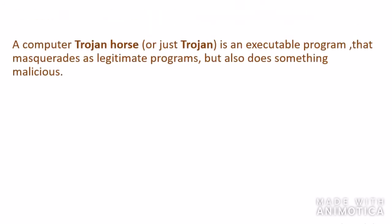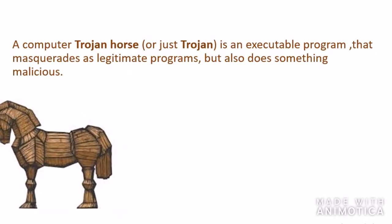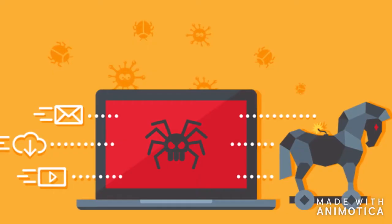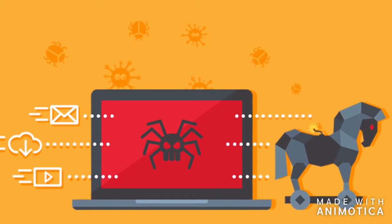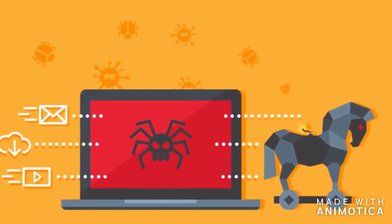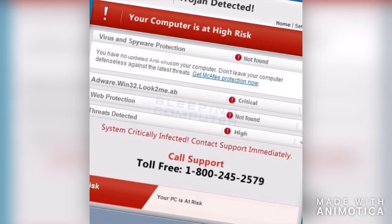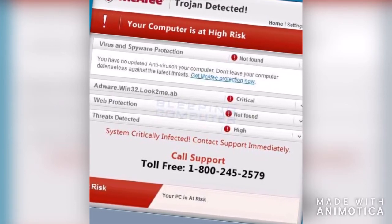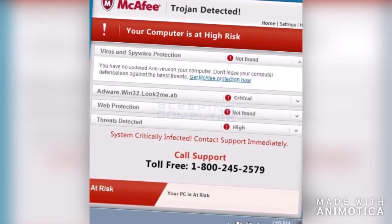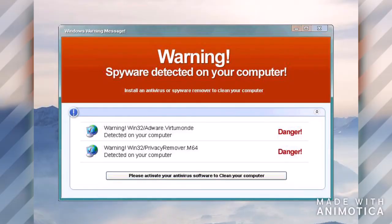Another type of malware is a Trojan horse. A Trojan horse is an executable program that disguises itself as a legitimate program but also performs something malicious. An attacker hides it in games, software patches, or email attachments. One of the most popular Trojans is the fake antivirus program, which pops up and tells you that you are infected, then asks you to run the antivirus program.